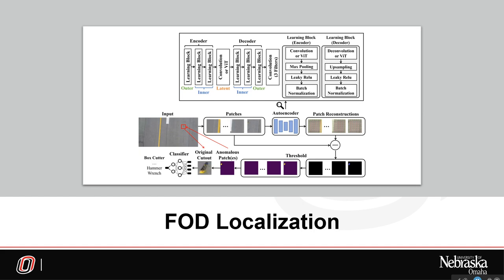With an understanding of the data used for this method, we can now discuss the FOD localization method. The proposed method provides FOD localization in the patches using a reconstruction technique. The reconstructed patches are used to propose patch-specific segmentation maps that label the background and the anomaly. As needed, the patch-specific segmentation maps can be combined to provide a full image segmentation or to display the FOD localizations on the entire image.